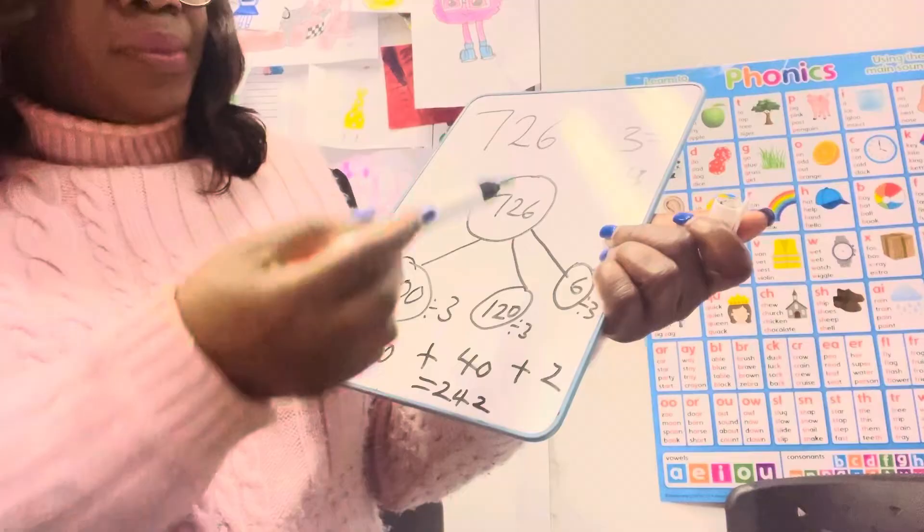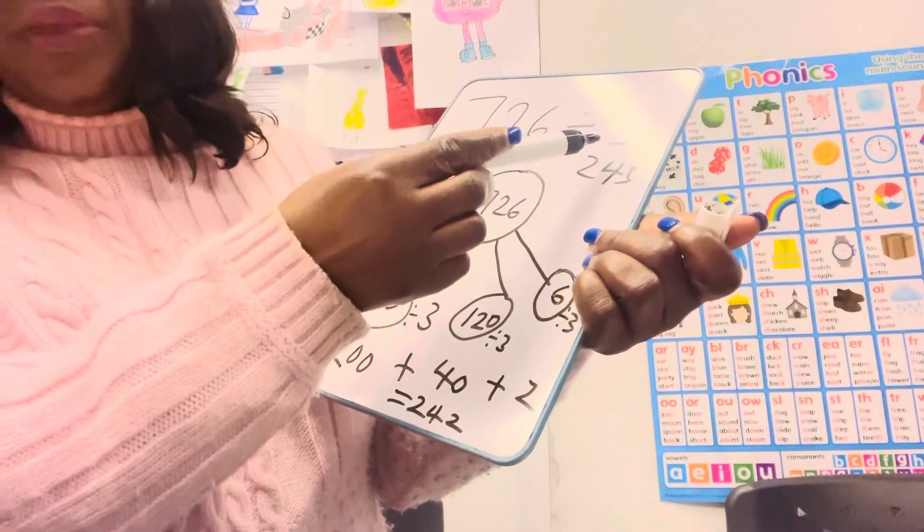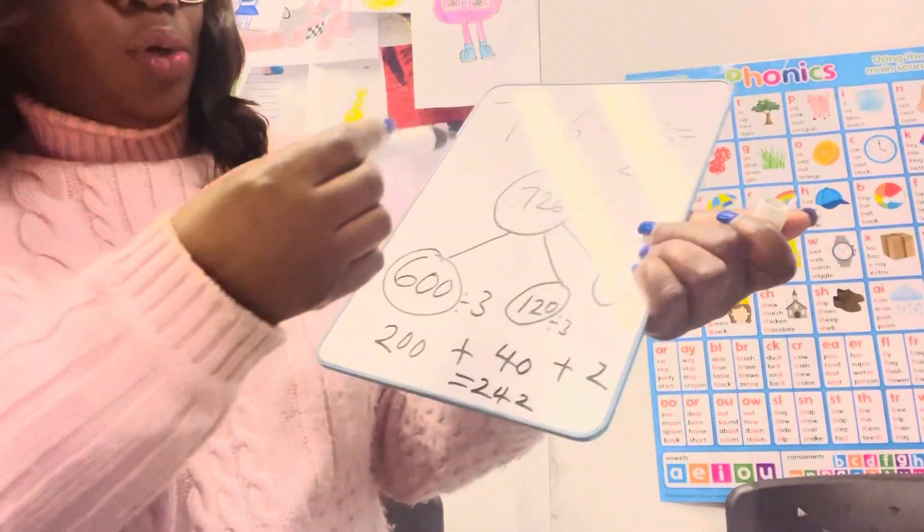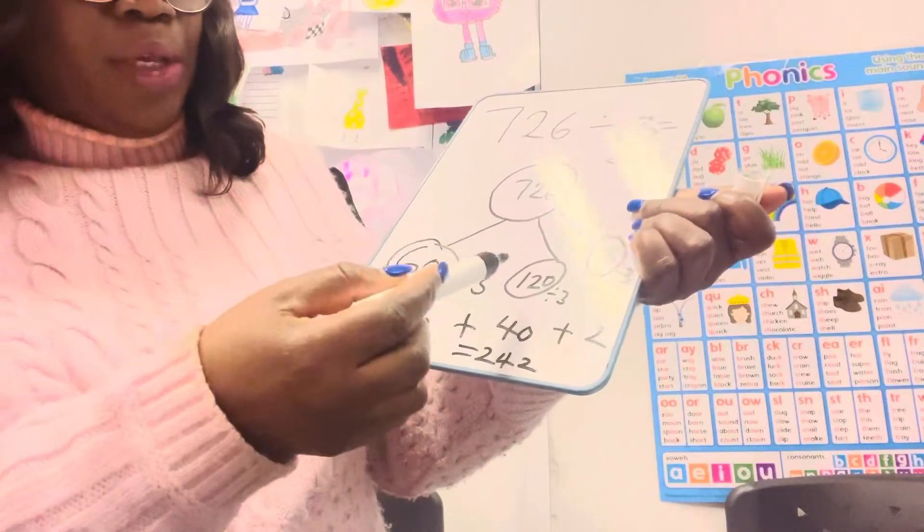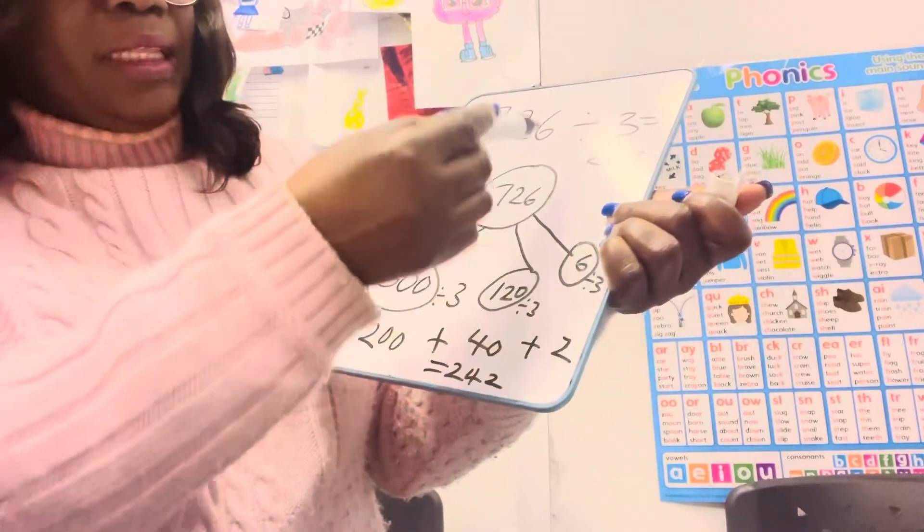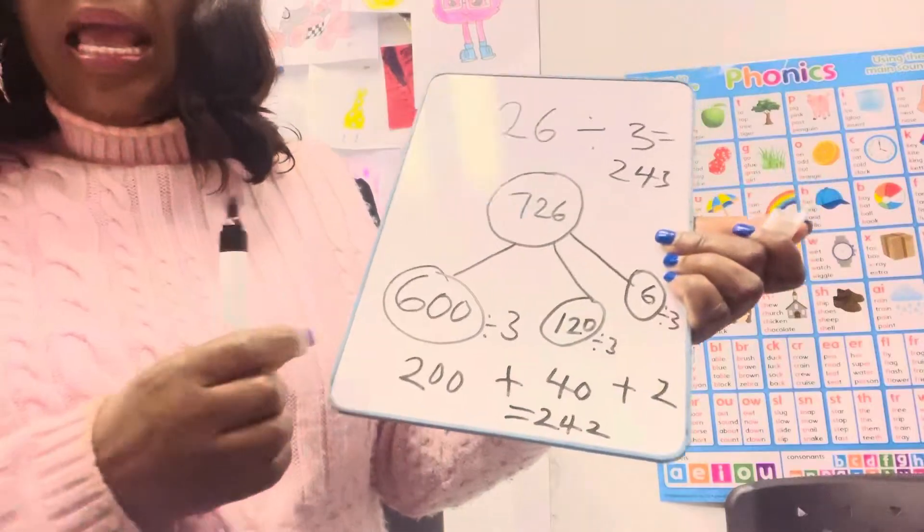Always remember that when you're splitting your numbers, make sure you're splitting into the number that is a multiple of the number that you've been given. In this case you're dividing by 3, so you should always do the number that you're comfortable with that you know is in the 3 times table when you're trying to split your number.